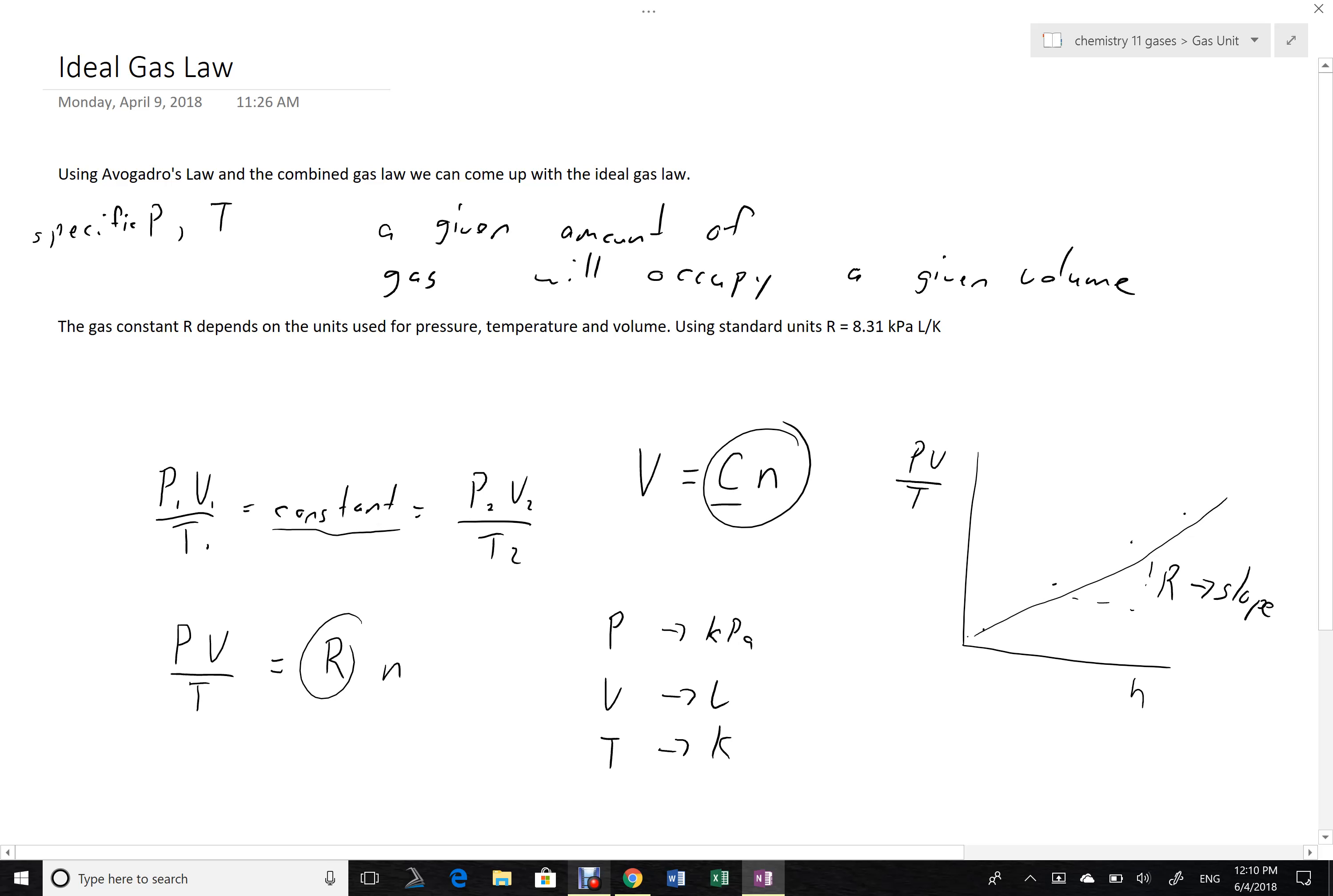And so we could set up our equation PV over T, which is like our Y value, is equal to Mx, or slope times n. The value with these units turns out to be 8.31 kilopascals liters per Kelvin.